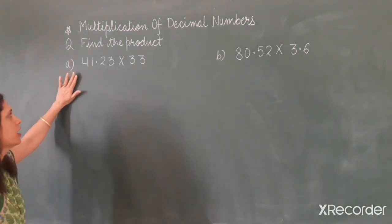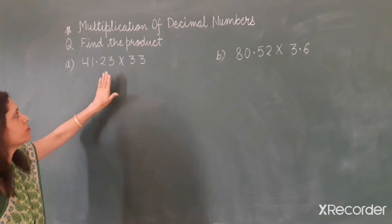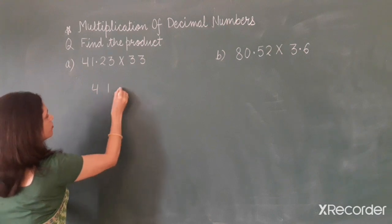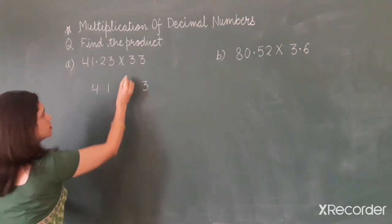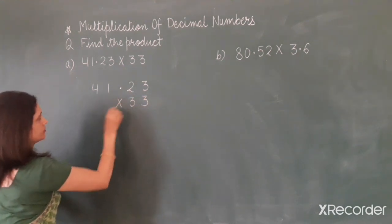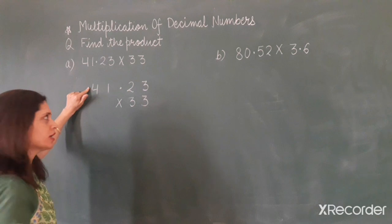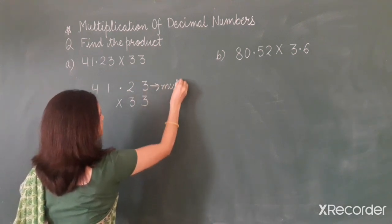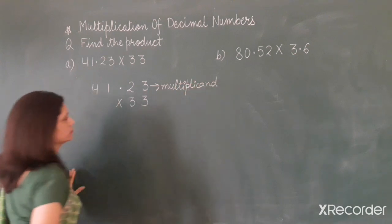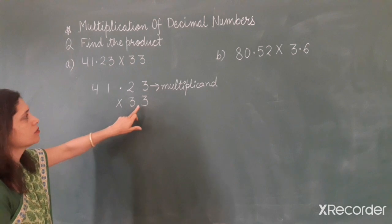First we will multiply these two numbers. Before multiplying, we will arrange the given numbers column wise. The first number is 41.23 and the second number is 33. The number which is to be multiplied is known as the multiplicand, and the number by which any number is multiplied is known as the multiplier.